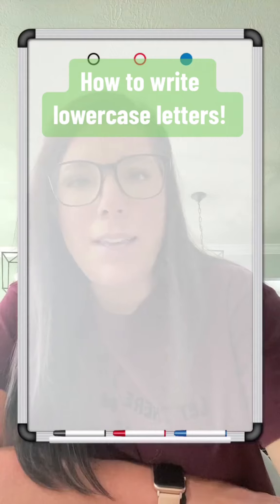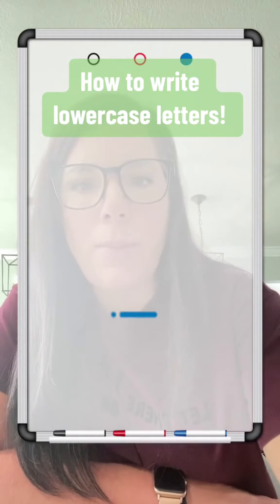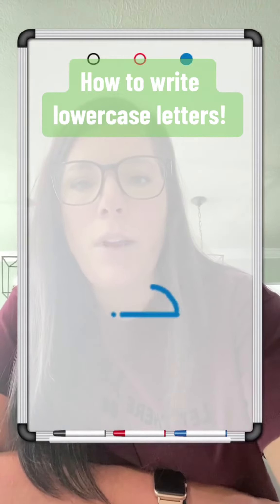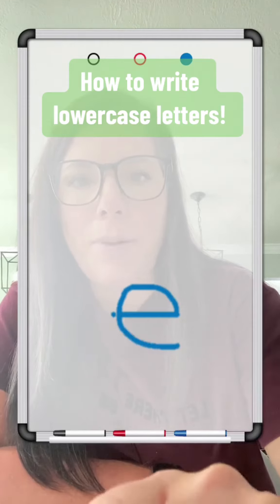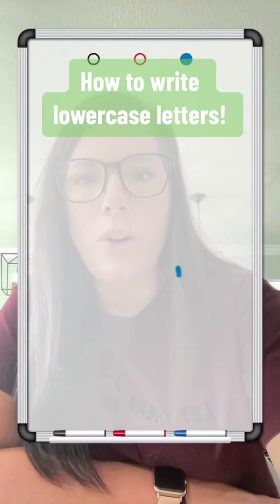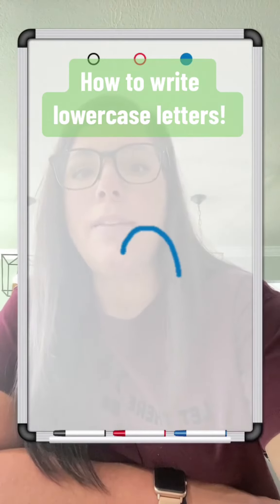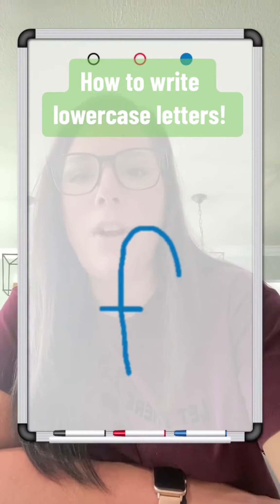E doesn't listen — he starts in the middle. We're going to hit the ball, run the bases and stop. F: you're going to curve up and dive down and cross.